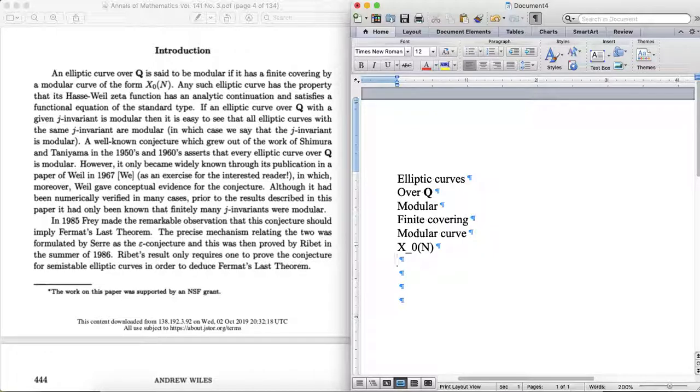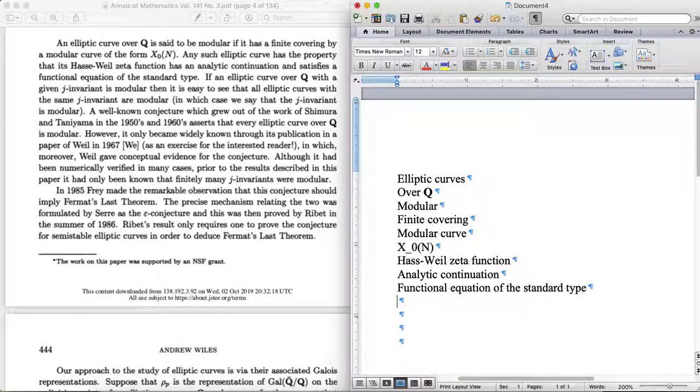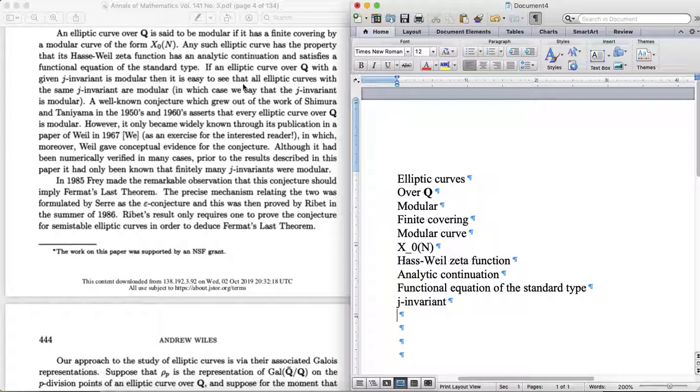Any such elliptic curve has the property that its Hasse-Weil zeta function has an analytic continuation and satisfies a functional equation. Some of these things I think I might understand once we get into it a little more, but I'm just going to write it down because I'm not sure right now. Of the standard type, I don't know what the standard type is. If an elliptic curve over Q with a given j-invariant is modular, then it's easy to see that all elliptic curves with the same j-invariant are modular, in which case we say that the j-invariant is modular.